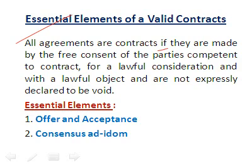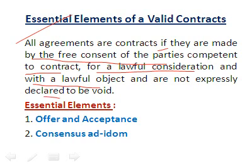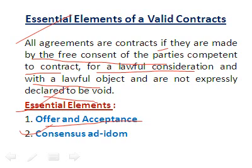To summarize the essential elements: all agreements are contracts if they are made by the free consent of competent parties, for a lawful consideration and with a lawful object, and are not expressly declared void. First is offer and acceptance — the offer must be accepted, and acceptance by both parties must involve consensus ad idem, meaning the same sense and same state of mind.